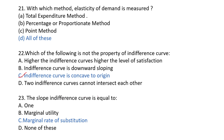Next question: the slope of the indifference curve is equal to? Basically, the slope of the indifference curve is equal to the marginal rate of substitution (MRS), which means the consumer is willing to substitute one good for another without changing their level of satisfaction. So the answer will be C: marginal rate of substitution.